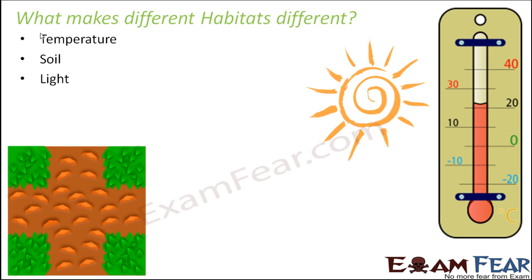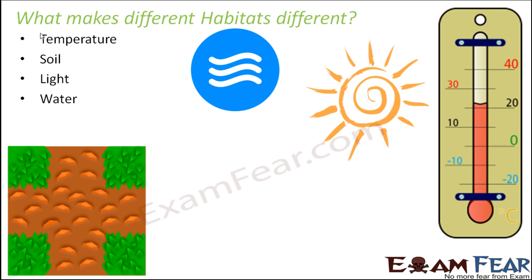Light is another important factor. All places located at equatorial regions receive more light compared to the polar regions, so the light is more, heat is more, and temperature is more. Water is also a differentiating factor — regions located close to coastal areas have more saline water. So comparing a marine habitat with a freshwater habitat, you see a huge difference because the concentration of salt in both waters is very different, and that makes the two habitats different.